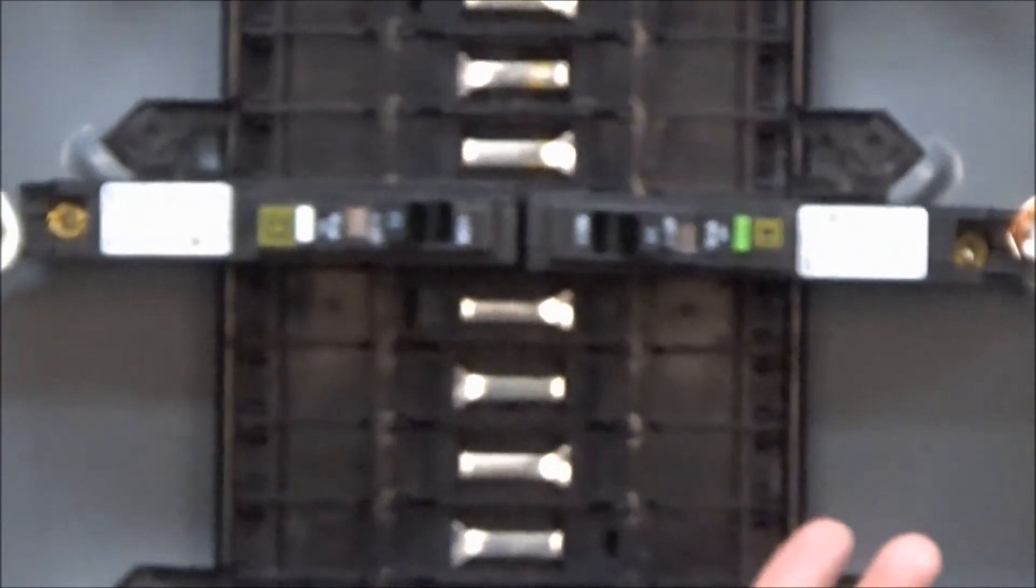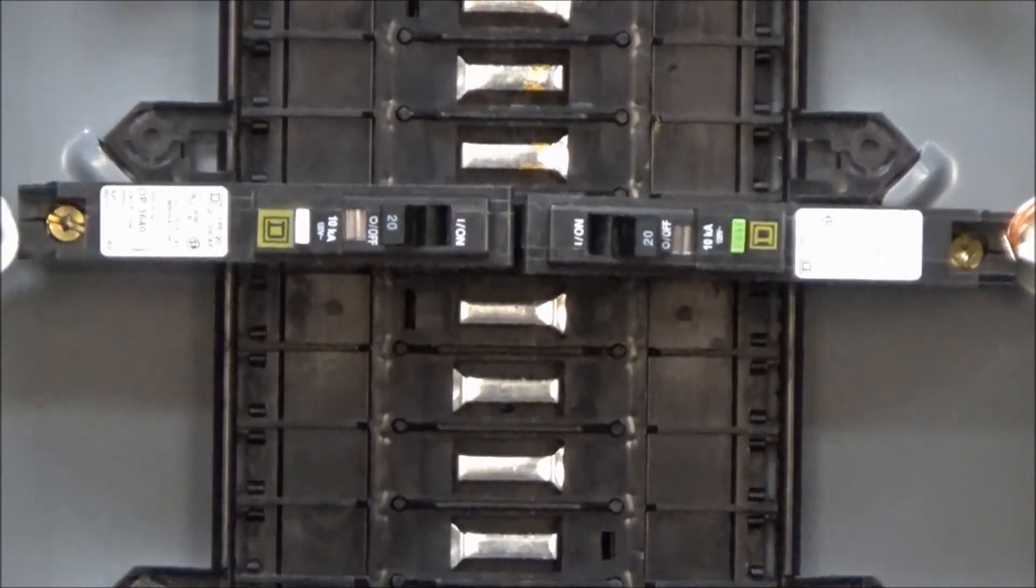The main difference that you'll notice between our arc fault breakers are the color of the test buttons. The green test button arc fault breakers are what we call our AFI or arc fault interrupters.